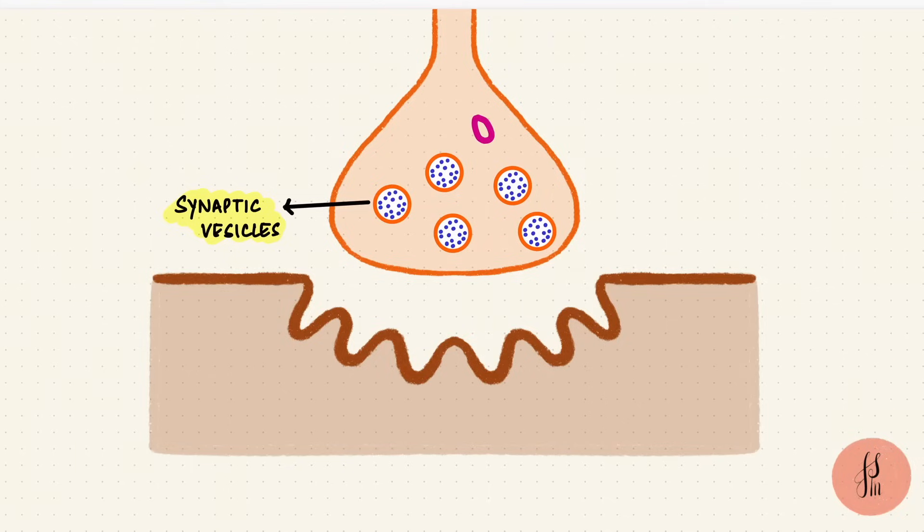Since energy is needed for the synthesis of acetylcholine, there's also mitochondria in the synaptic terminal. These vesicles are going to fuse with the membrane to release their content. The sites at which they fuse are called the active zones.